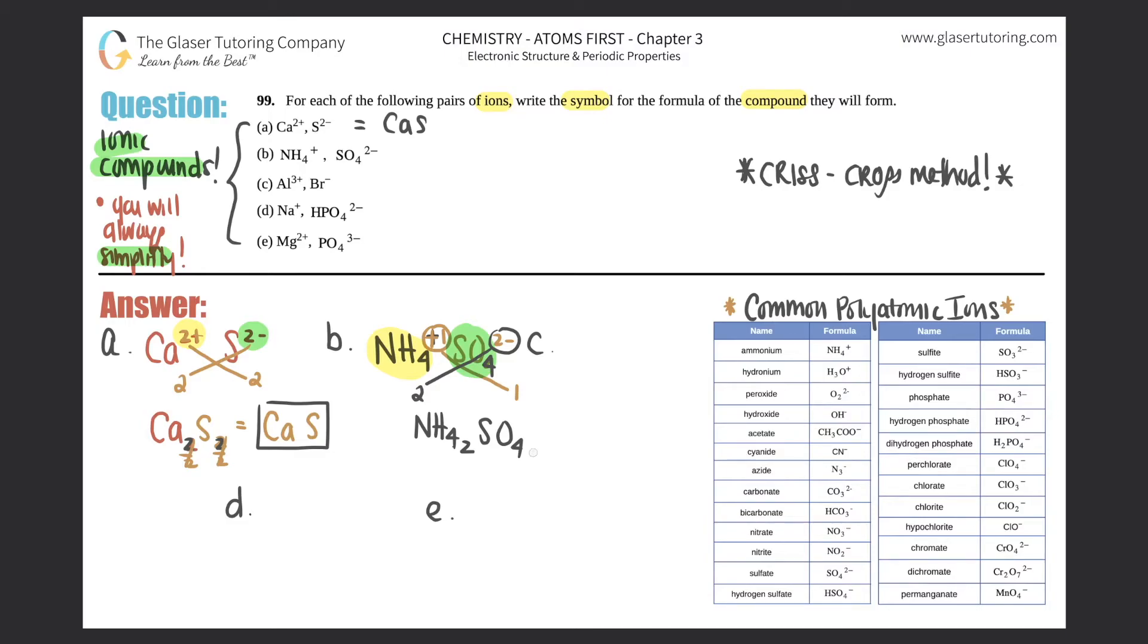Here's the catch: if I just wrote NH₄₂SO₄₁, that would be technically incorrect. First, whenever we have one of something we don't have to write it, so this one goes away. But now you have to state that you have two of the whole entire polyatomic. We always do that with parentheses. So the final answer is (NH₄)₂SO₄. You have two ammoniums and one sulfate.